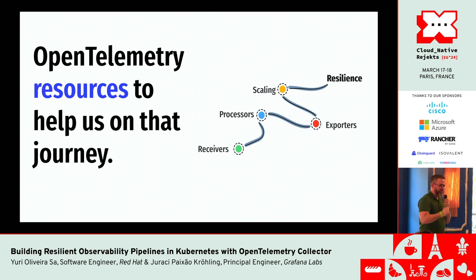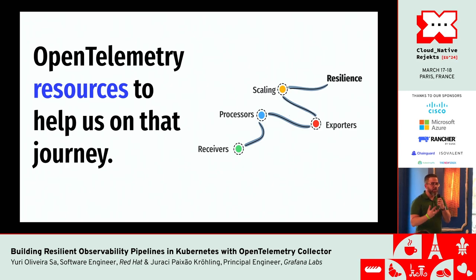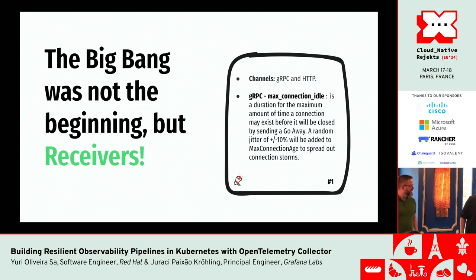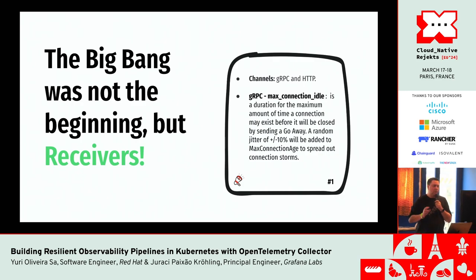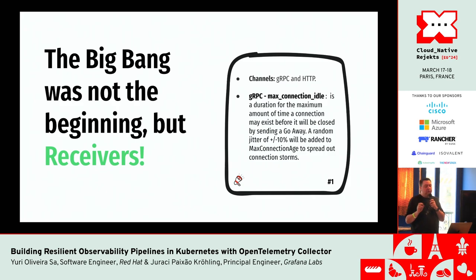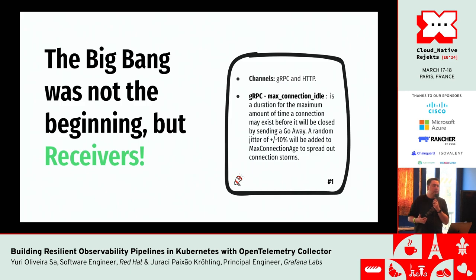Most of you have already configured receivers to receive telemetry data like logs, metrics, and traces, processed that data, and transmitted it to a backend. But how can we make it resilient? When we think about resiliency in terms of receivers, receivers are the beginning of the journey of the telemetry data. There are many things you can do with receivers to ensure you have a resilient receiving side. Most of them relate to the resiliency of the connection itself — you should ensure that you can still receive data even if the rest of your pipeline is problematic.